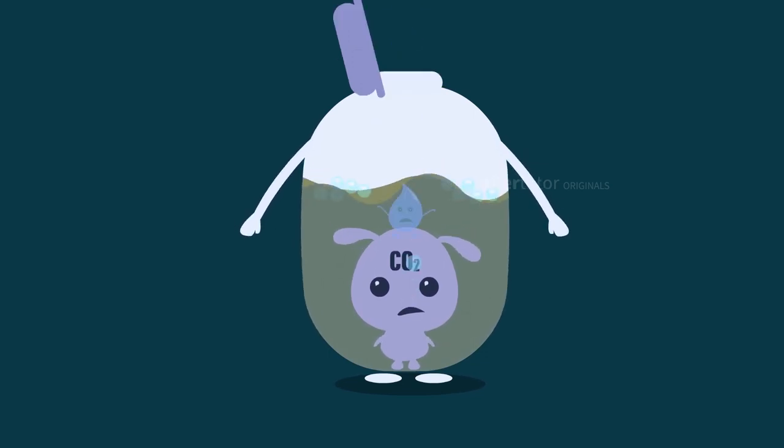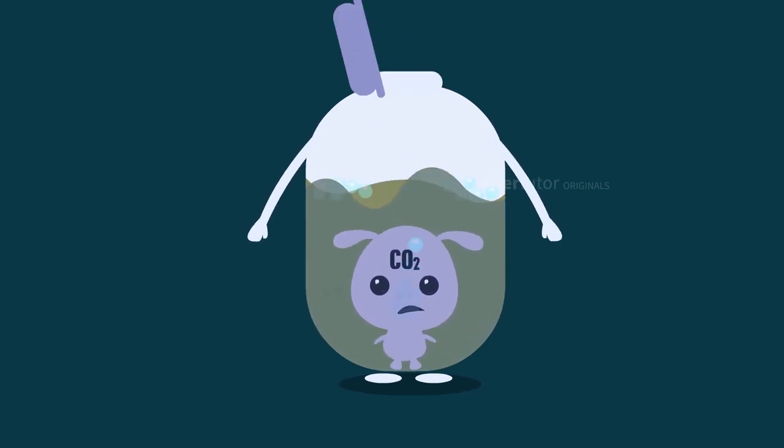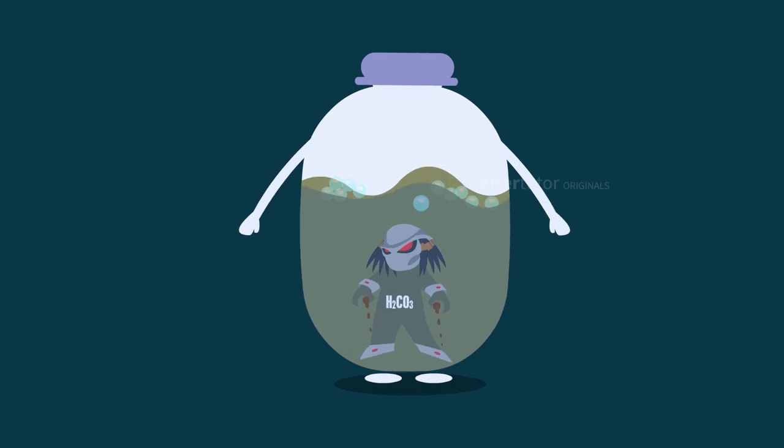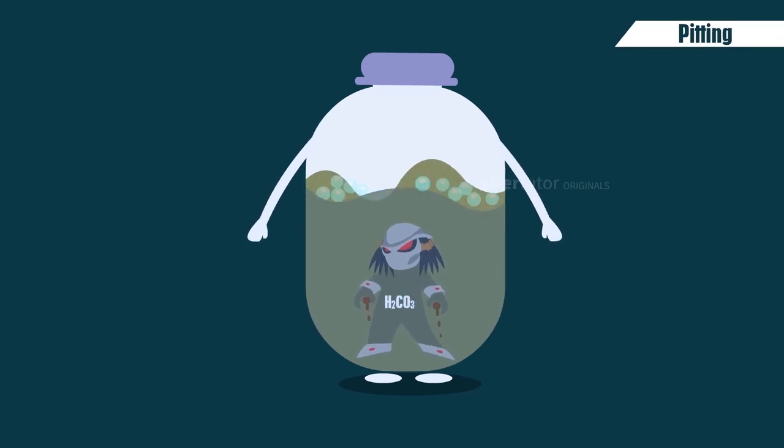Carbon dioxide, when reacts with water, forms carbonic acid. The formed carbonic acid causes corrosion in the boiler, which is called as pitting, nothing but the localized form of corrosion.